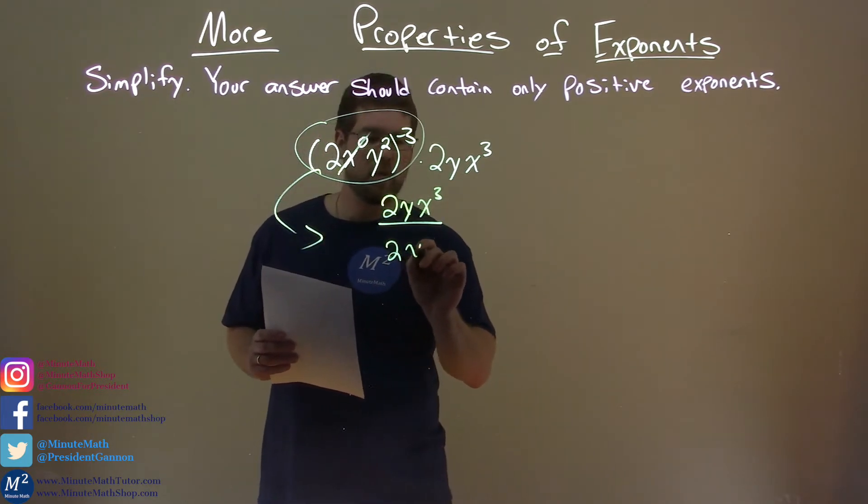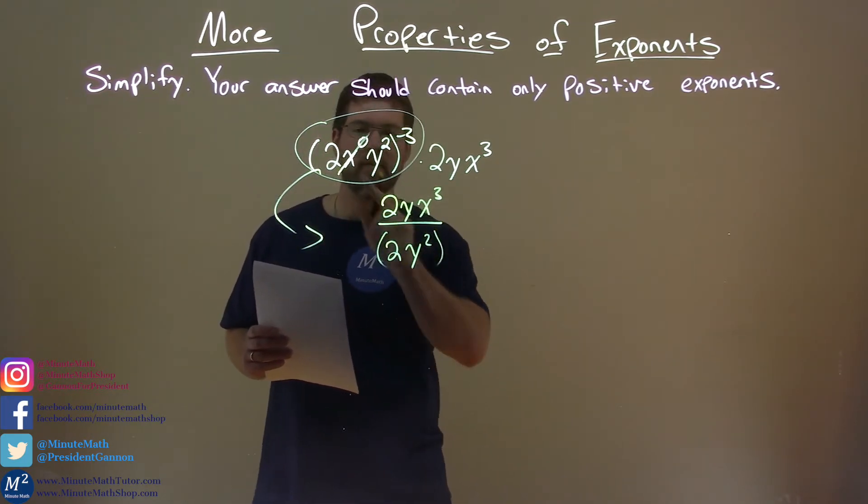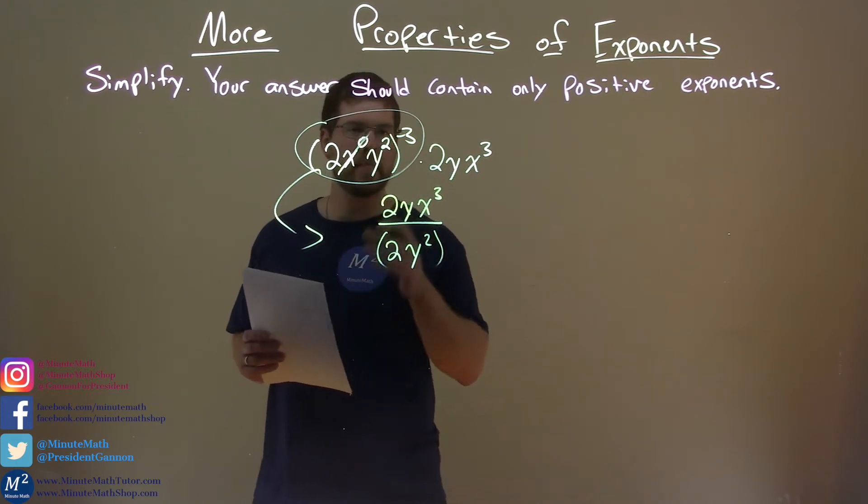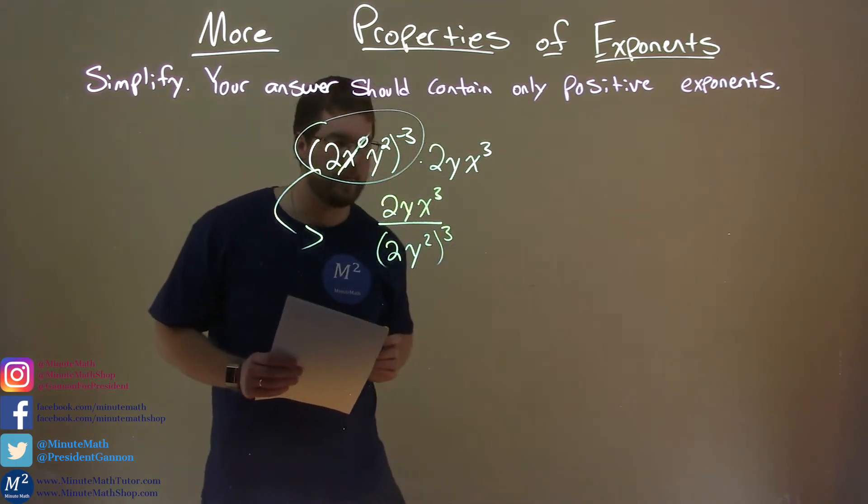So we have 2y squared, remember the x to the zero is just 1, don't need to write that, and negative third power becomes a positive third power.